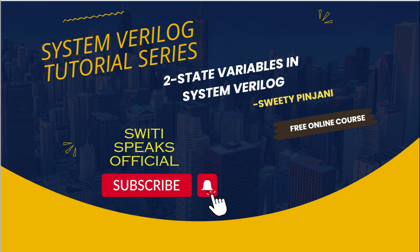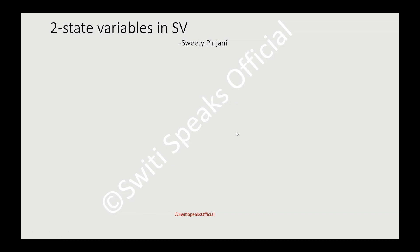Hello everyone, welcome to Sweetie Speaks official YouTube channel. Today's topic is two-state variables in SystemVerilog. The first two-state variable is 'bit', which is a single-bit unsigned variable — unsigned means it doesn't contain any negative value.